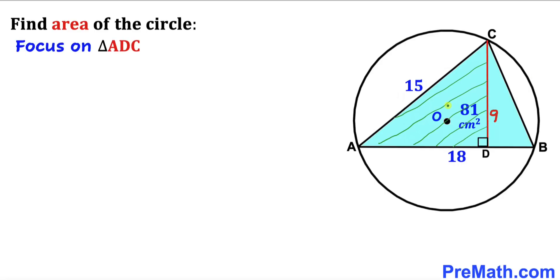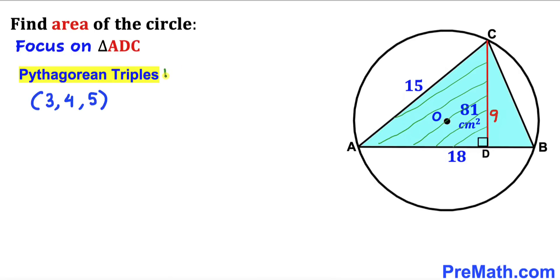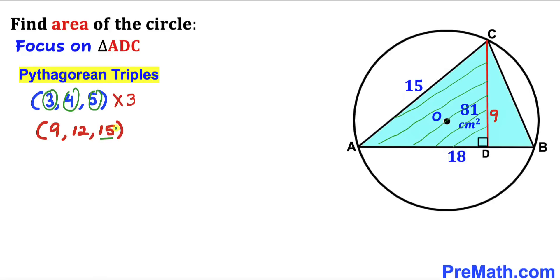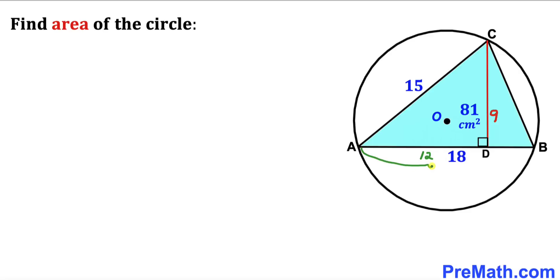Now let's focus on right triangle ADC, whose legs are 9 and whose hypotenuse is 15. We recall the Pythagorean triplet 3, 4, 5 and multiply all numbers by 3, giving us 9, 12, and 15. So the unknown side length AD is 12 centimeter. Since the whole chord AB is 18 and AD is 12, the length BD is 18 minus 12, which gives us 6 centimeter.